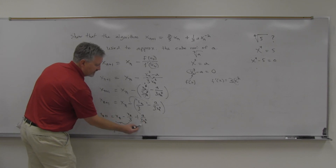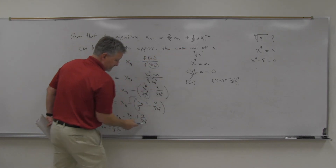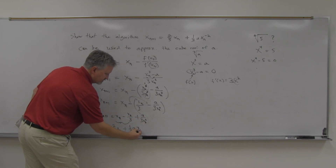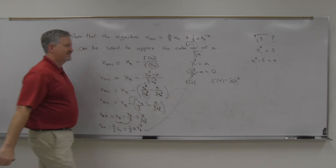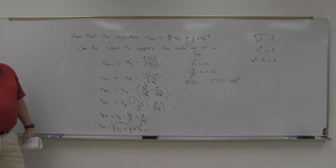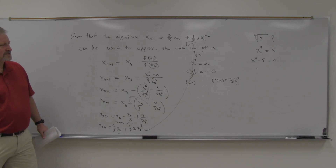Looking at the remaining term, a over 3xₙ² is the same as one-third times a times xₙ to the negative two. So we've shown that Newton's method for this problem simplifies to x_{n+1} = (2/3)xₙ + (1/3)·a·xₙ⁻², which is exactly the algorithm given. It's a little tricky, but that's another type of problem on this assignment.